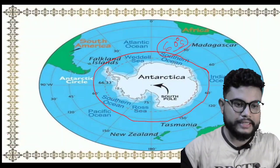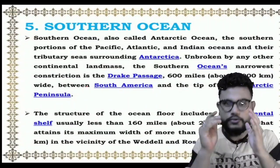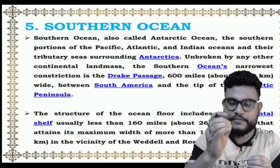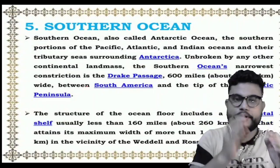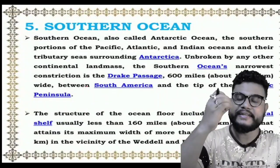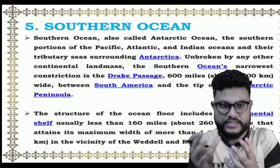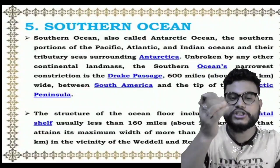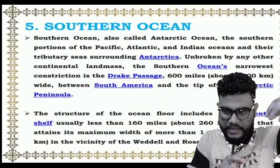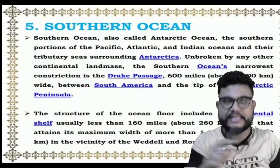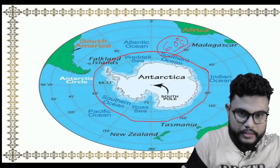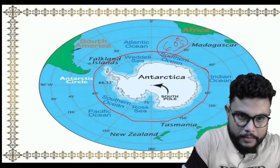Some important things about the Southern Ocean: it is the Antarctic Ocean — the portion of the Pacific, Atlantic, and Indian Oceans and their tributary seas surrounding Antarctica, unbroken by any other continental landmass. The Southern Ocean's narrowest constriction is the Drake Passage — about 600 miles (1,000 km) between South America and the Antarctic Peninsula.